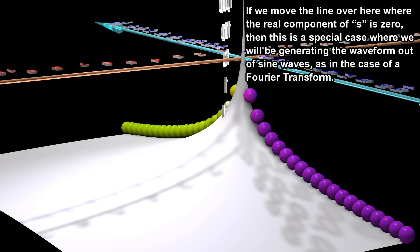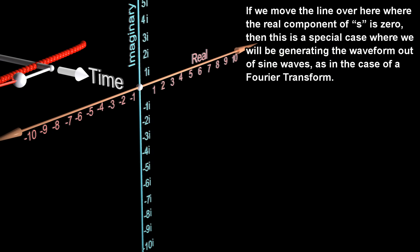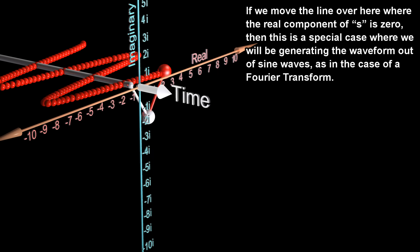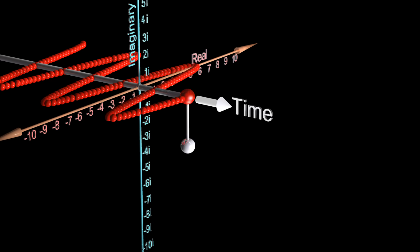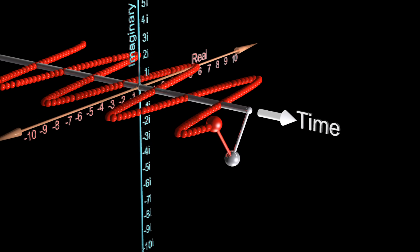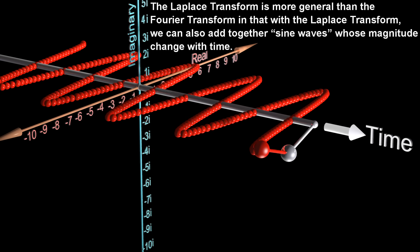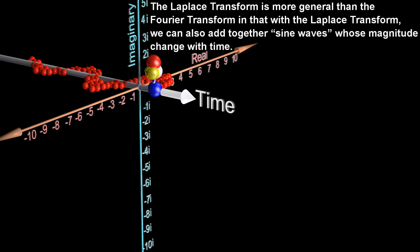If we move the line over here where the real component of S is zero, then this is a special case where we will be generating the waveform out of sine waves, as in the case of a Fourier transform. The Laplace transform is more general than the Fourier transform, in that with the Laplace transform, we can also add together sine waves whose magnitude changes with time.